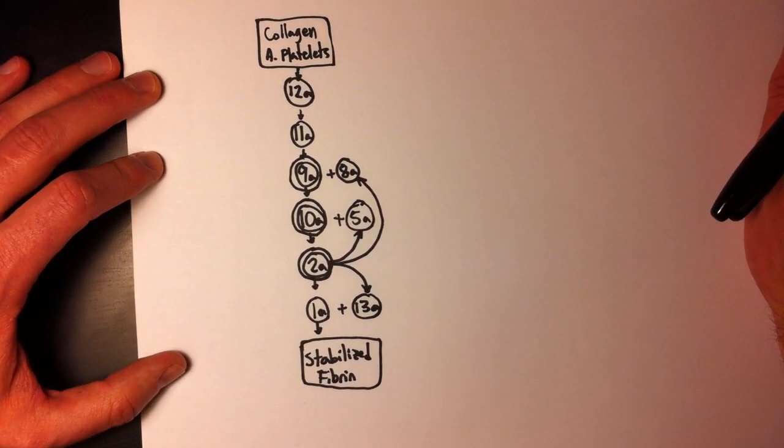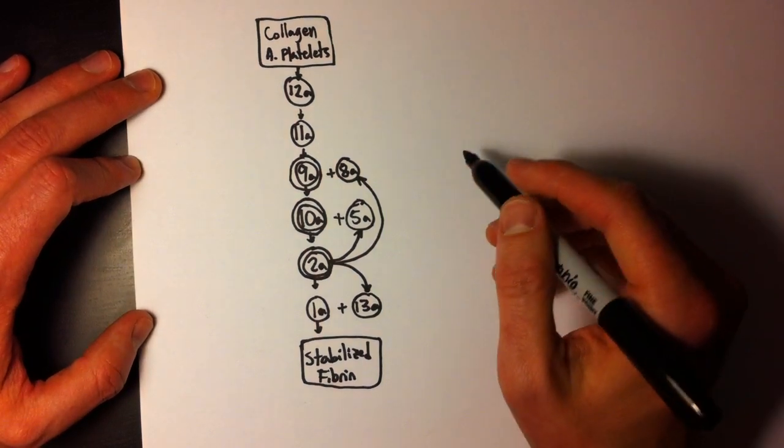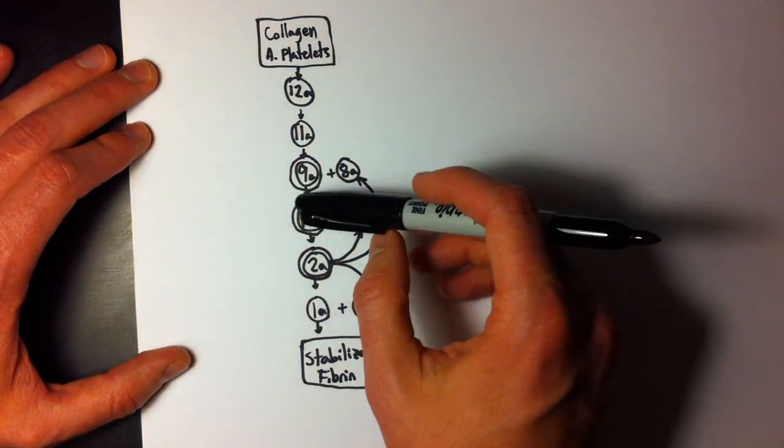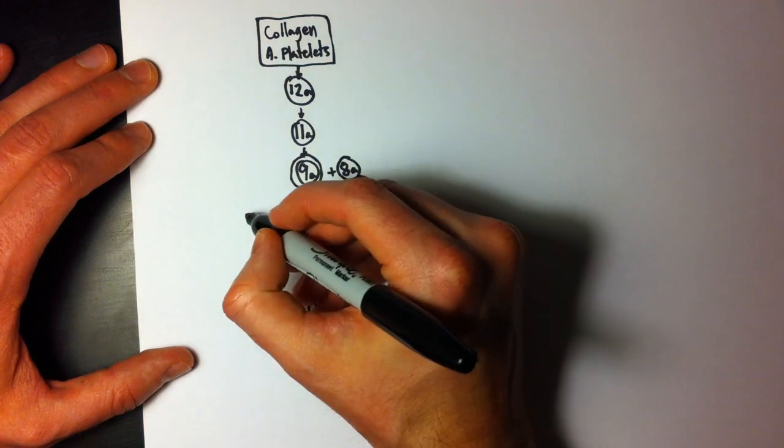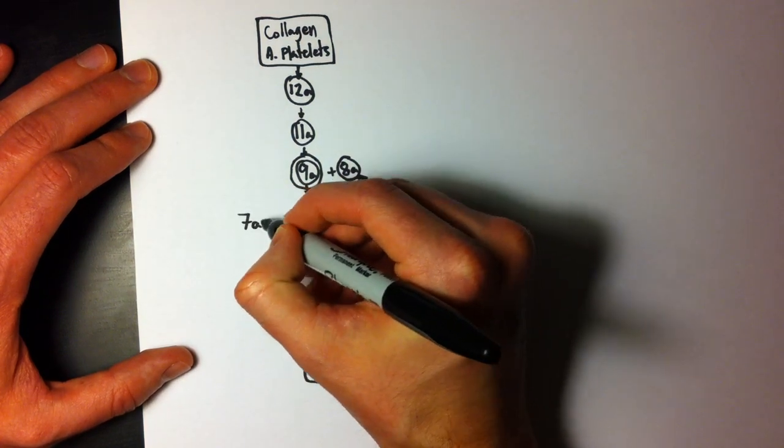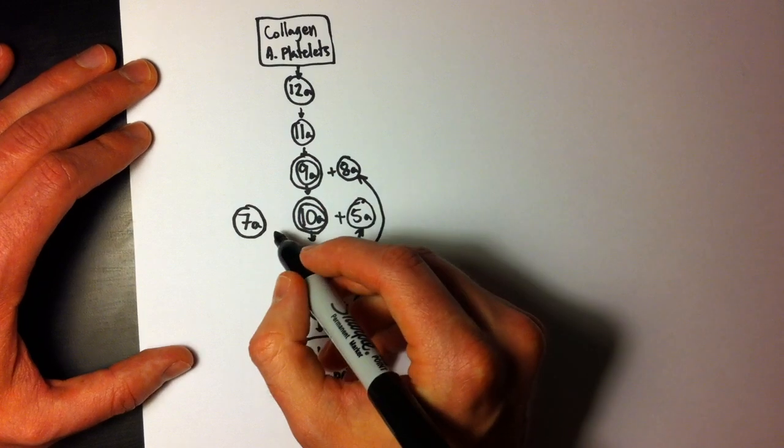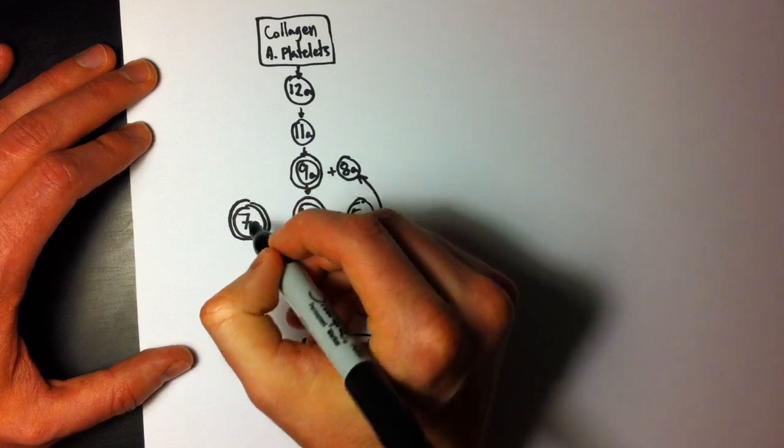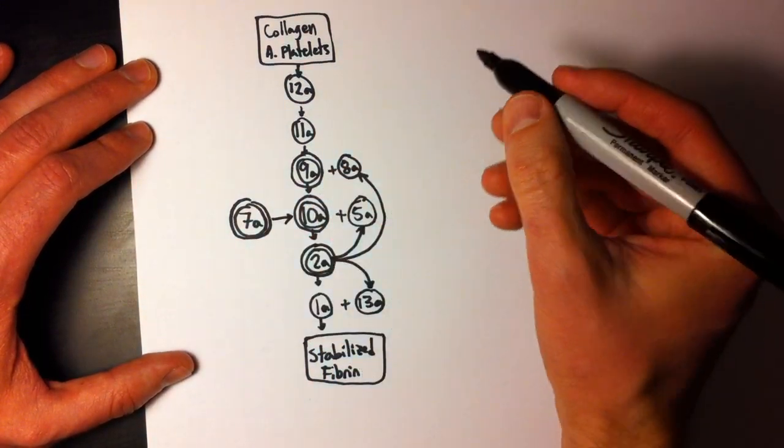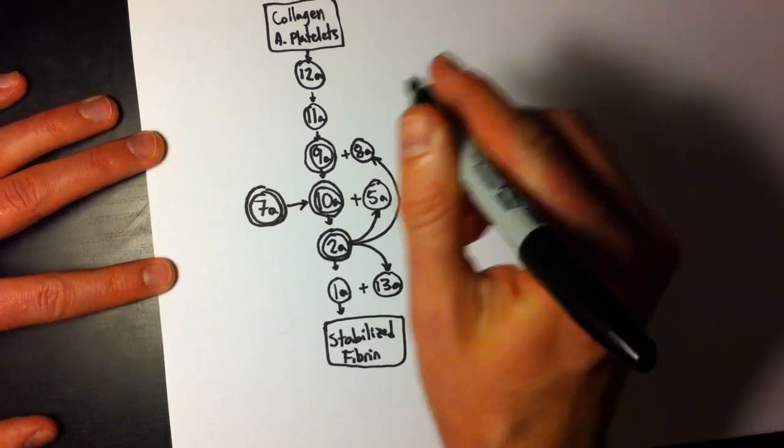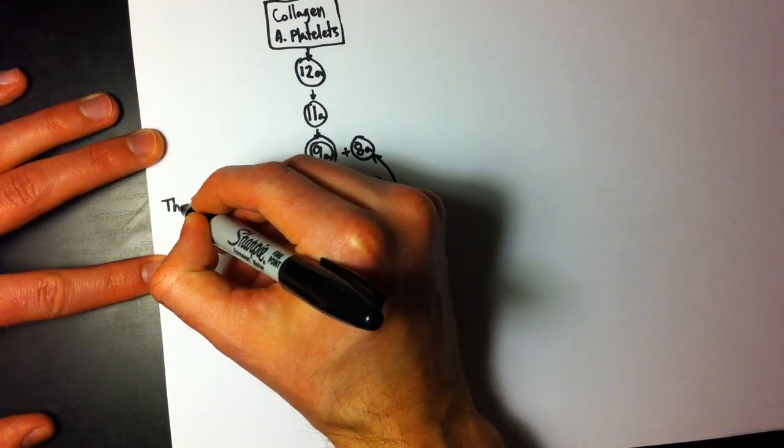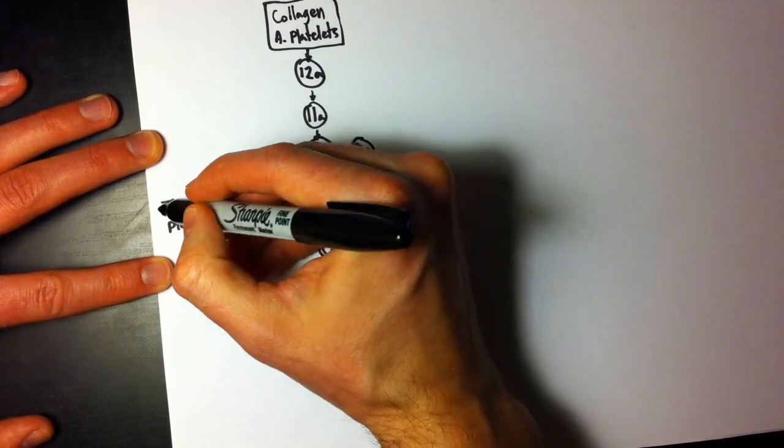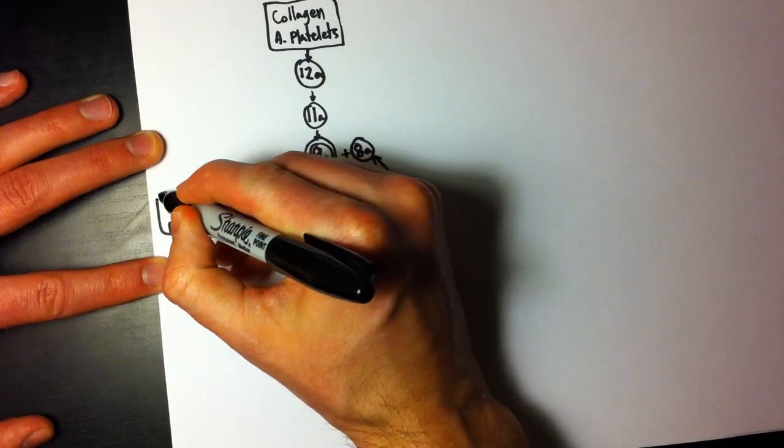So the only thing to add now is the extrinsic pathway. Extrinsic pathway comes in and matches up into 10A. There's a different way to make 10A. Besides using 9A, you can use 7A. And that, I just go over here, 7A. In order to make 7A, you also need calcium. So I'm going to give that the same double circle. Give it a little arrow here. And the one last thing is just what activates that. Thromboplastin, you've probably heard. I'm going to split it into two lines. It's one word. Thromboplastin.